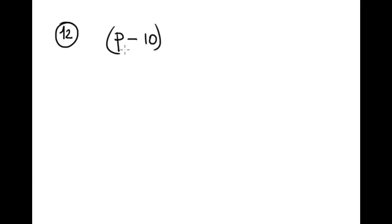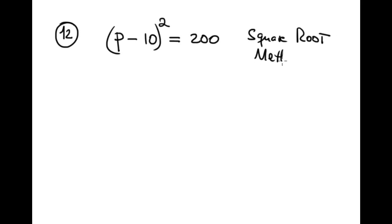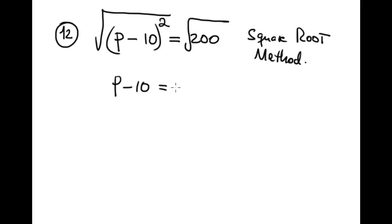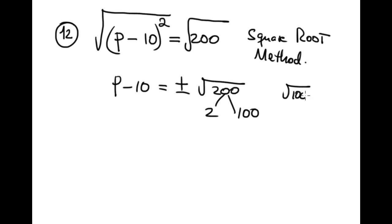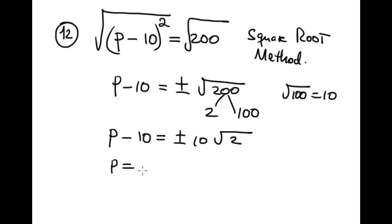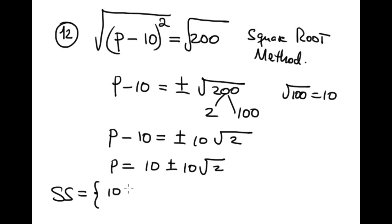Number 12: (p − 10)² = 200. Again, apply the square root method — square root both sides. So p − 10 equals plus or minus √200. Now √200 = √(100 · 2) = 10√2. The solution set is { 10 + 10√2, 10 − 10√2 }.